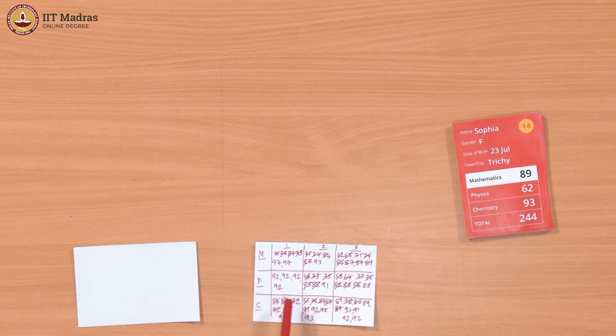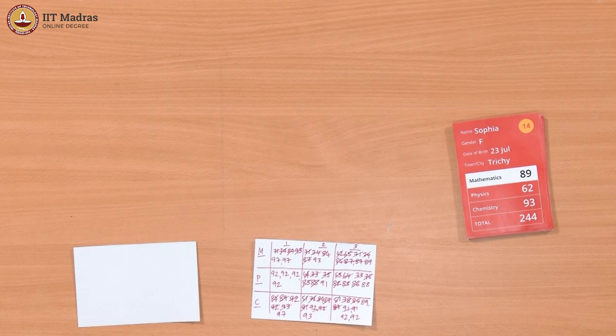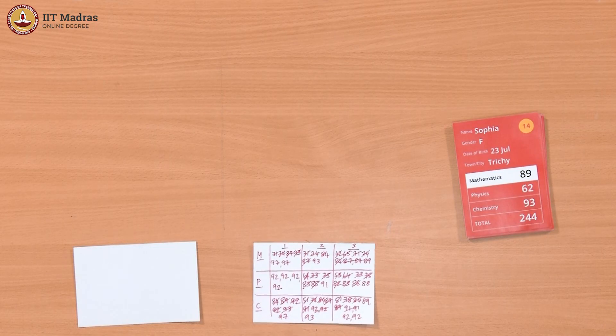Similarly, in physics it was 92, 91, 88. Chemistry it was 97, 93, 92. But what we have not recorded is who got these marks. We only know that somebody got 92, somebody got 88. We noticed that the topper in chemistry had not got very good marks in maths and physics, and vice versa.